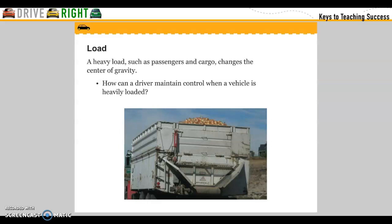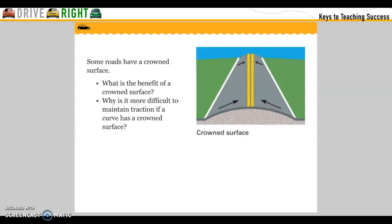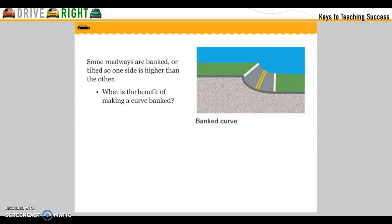A heavy load, such as passengers and cargo, changes the center of gravity. How can a driver maintain control when a vehicle is heavily loaded? The shape of the roadway affects your ability to control your car. Many roads are level, some roads have a crowned surface. What are the benefits of a crowned surface, and why is it more difficult to maintain traction if a curve has a crowned surface? Some roadways are banked or tilted so one side is higher than the other. What are the benefits of a curved bank?